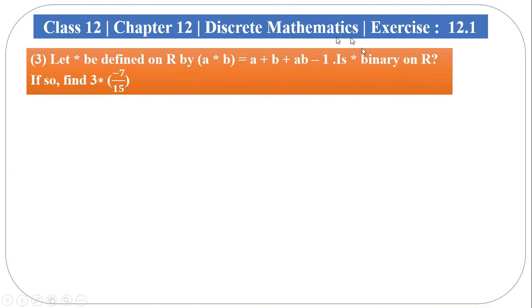If star is a binary operation, then we have to find 3 star minus 7 divided by 15. So if we choose a and b belonging to R, it is called a real number. Let's start the example.